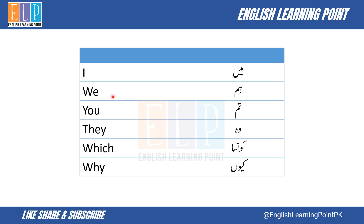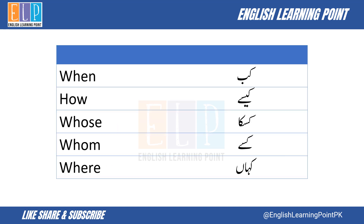I. We — hum. You — tum. They — wo log. Which — kaun sa. Why — kiun. When — kab. How — kaise. Who's — kis ka. Hum — kise. Where — kaha.